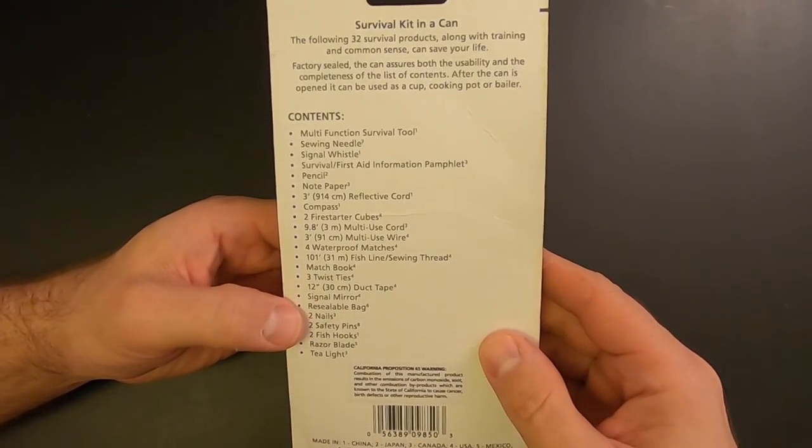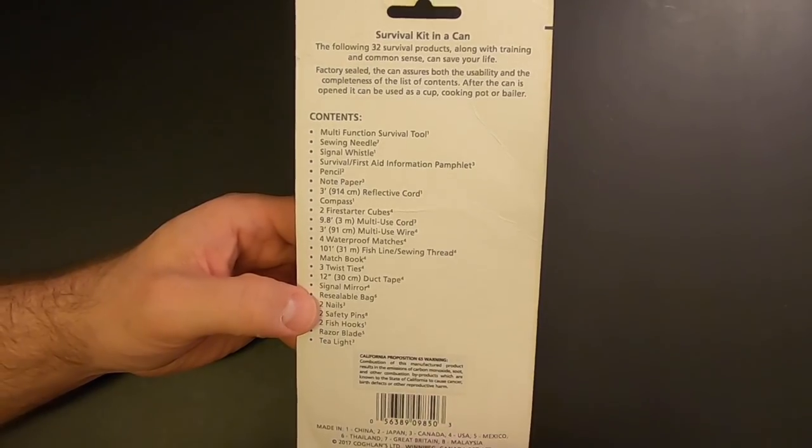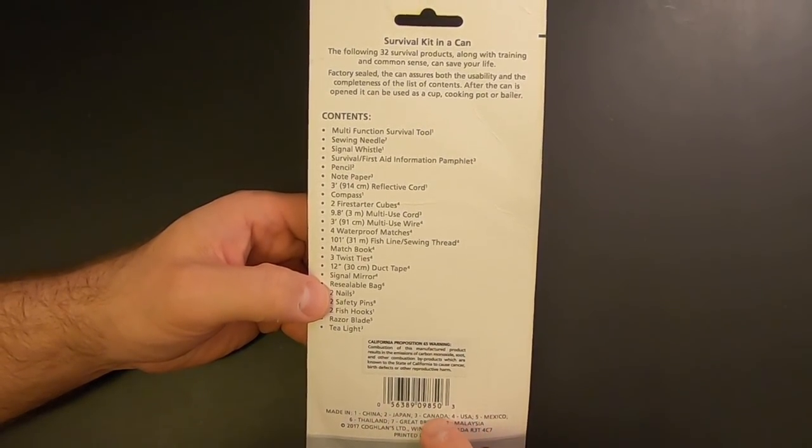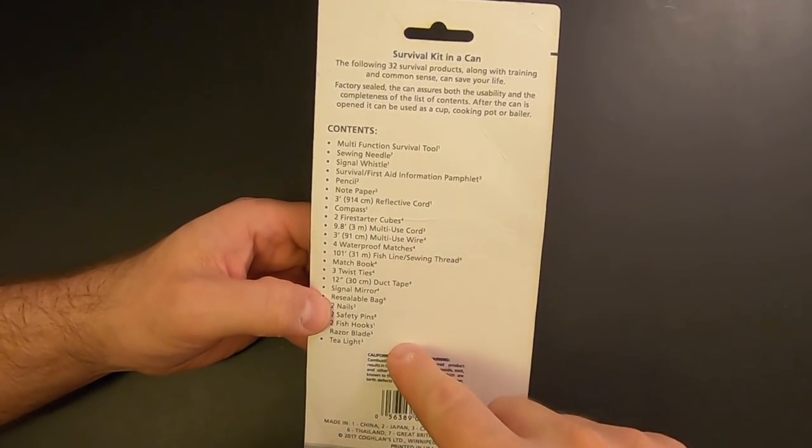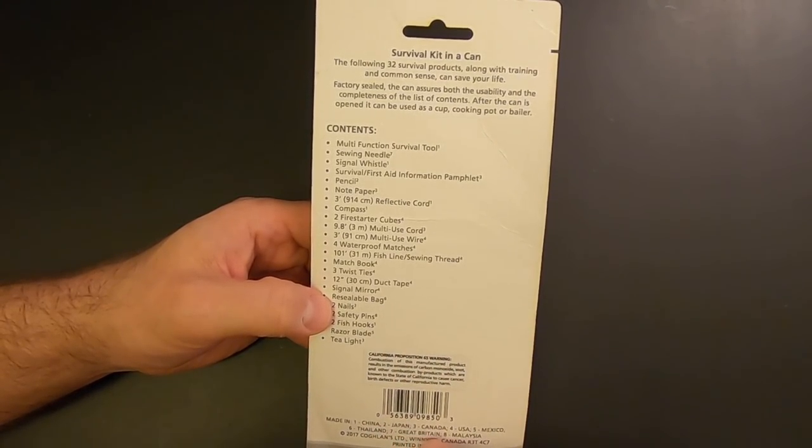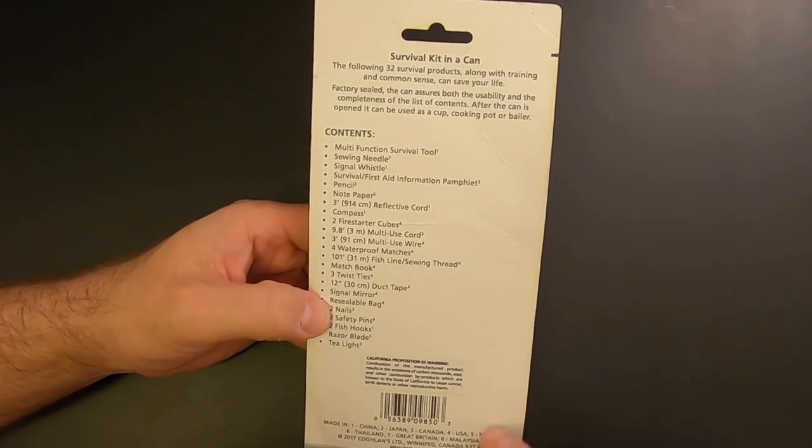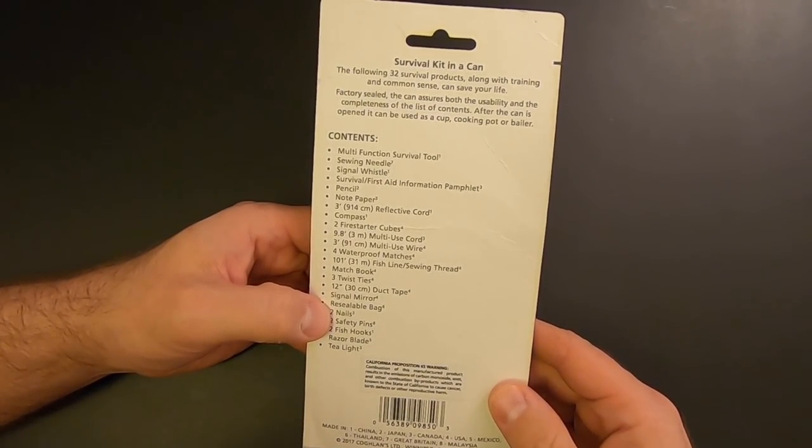And they've got a list of the contents here. You can pause and read that list if you want. And what's interesting is down here, they've got a guide to where each item is made. So it's a mixture of items made in China, Japan, Canada, the U.S., Mexico, Thailand, Great Britain, and Malaysia. Coughlin's is a Canadian company.